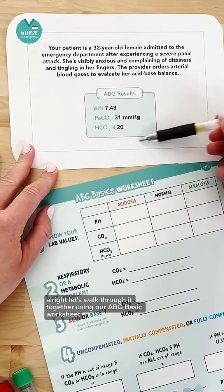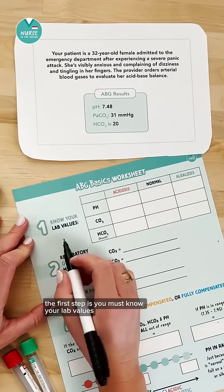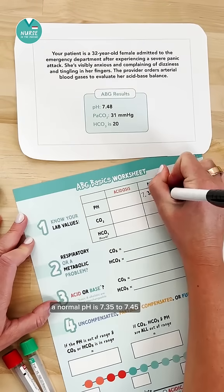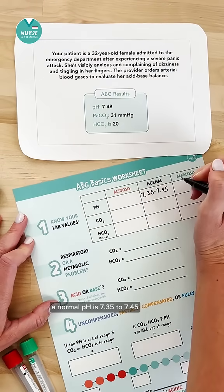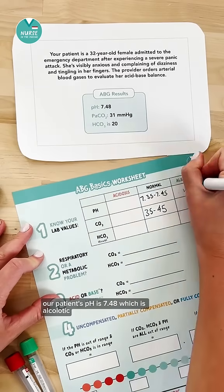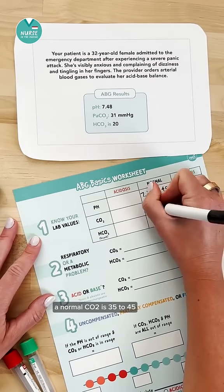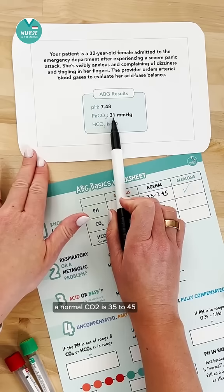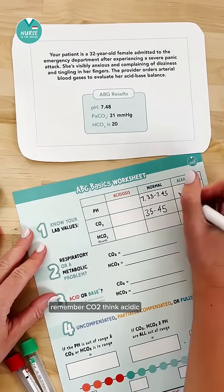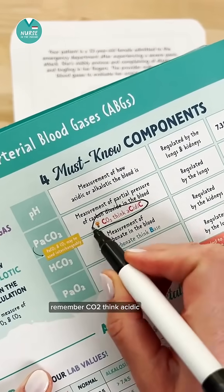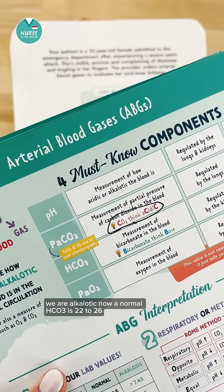Let's walk through it together using our ABG basic worksheet. The first step is you must know your lab values. A normal pH is 7.35 to 7.45. Our patient's pH is 7.48, which is alkalotic. A normal CO2 is 35 to 45. Hers is 31, so that's low or alkalotic. Remember, CO2 is acidic, so if we have a low amount we are not very acidic — we are alkalotic.